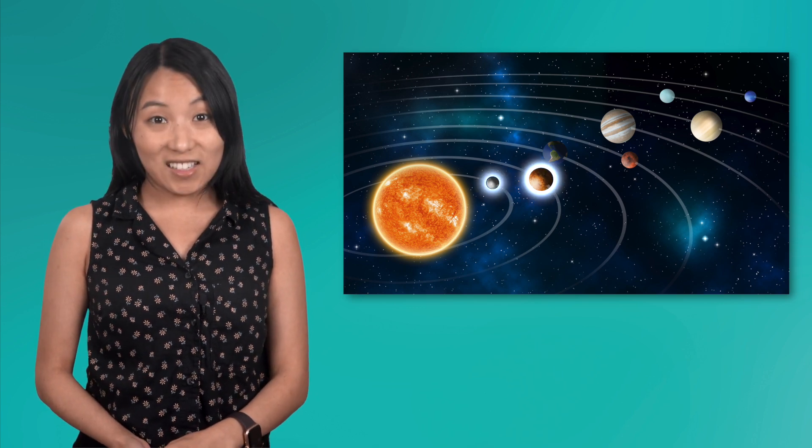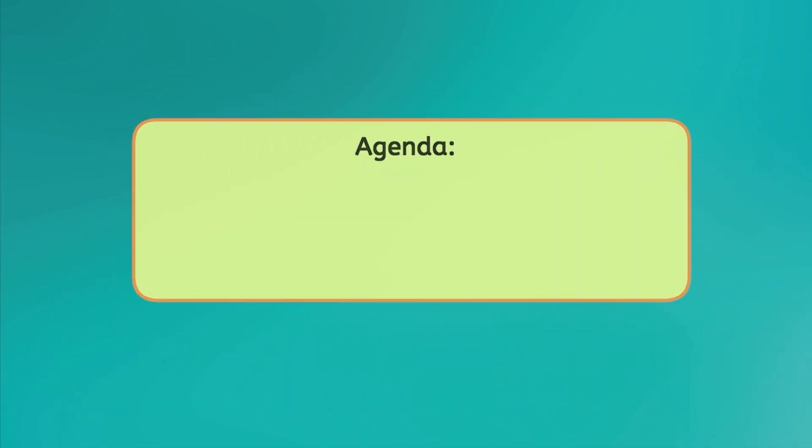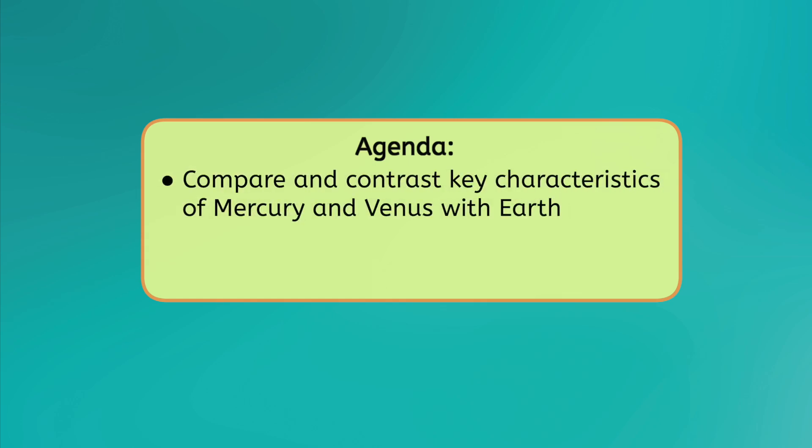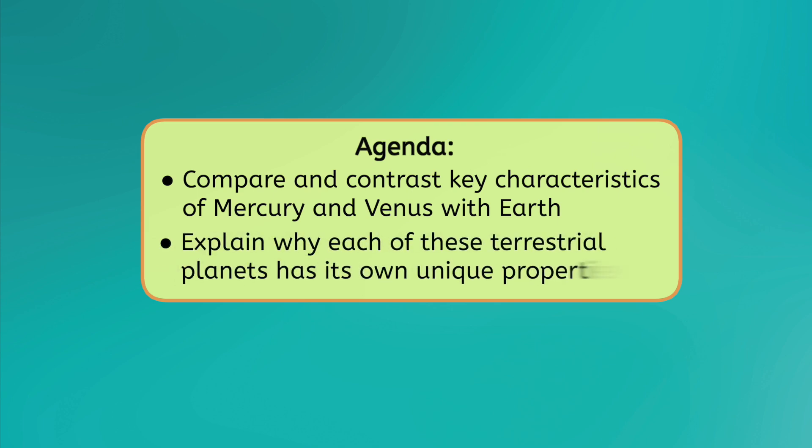Today, we're going to focus on the two planets closest to the Sun, Mercury and Venus. By the end of this lesson, you'll be able to compare and contrast key characteristics of Mercury and Venus with Earth and explain why each of these terrestrial planets has its own unique properties. Let's get started.